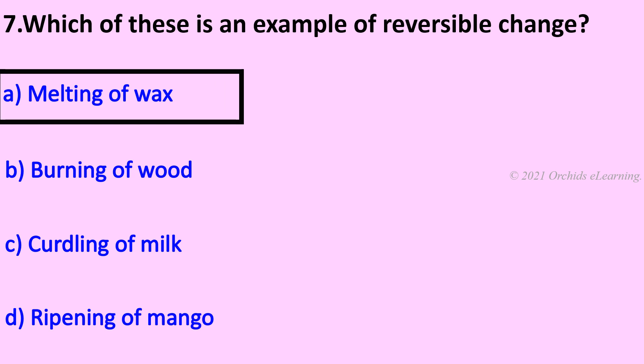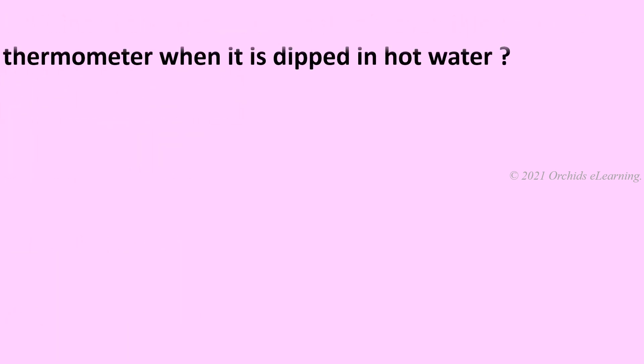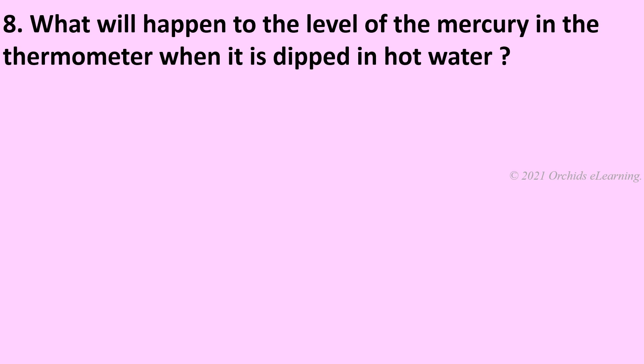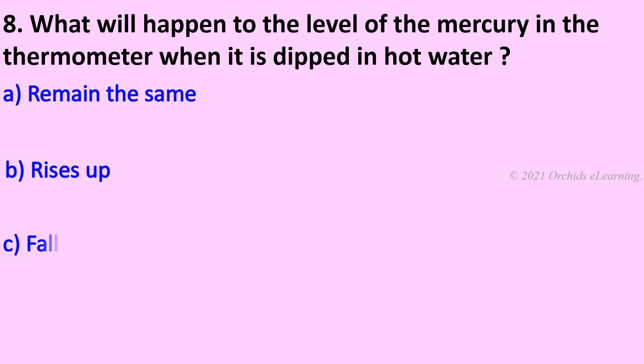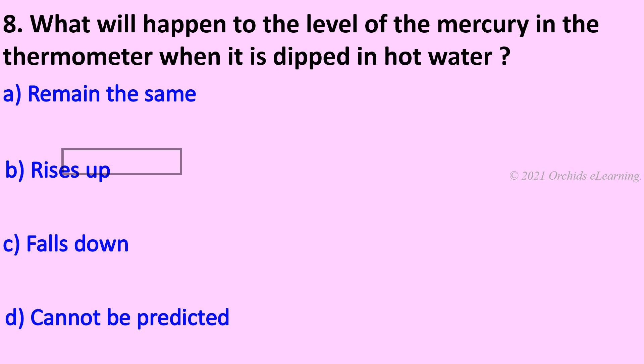Which of these is an example of a reversible change? Melting of wax. What will happen to the level of mercury in the thermometer when it is dipped in hot water? It rises up.